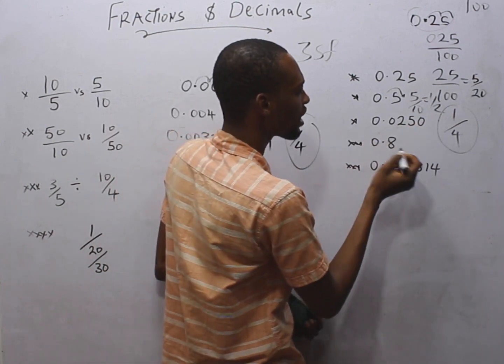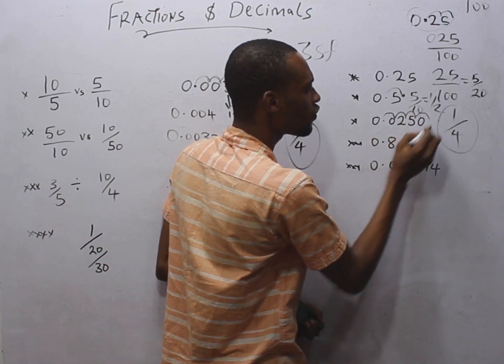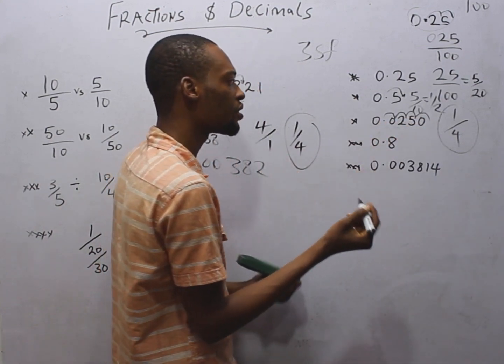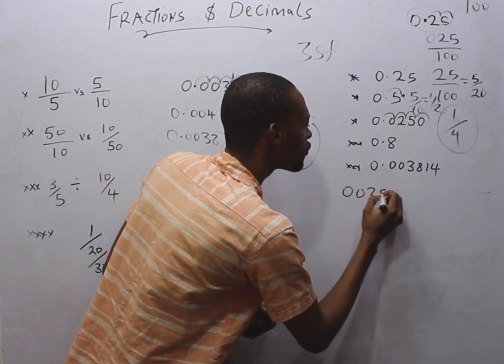1, 2, 3, 4. 4 zeros. So this means we get 0, 0, 2, 5, 0 over 1, 0, 0, 0.